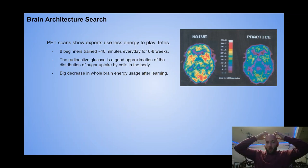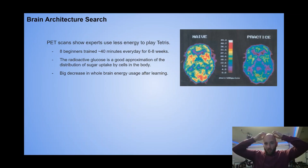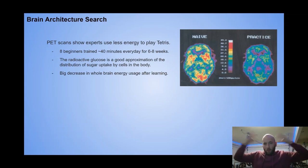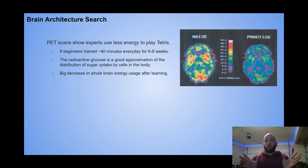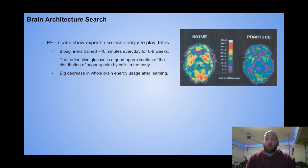The radioactive glucose is decomposing and causing gamma ray light to be emitted through the brain. The PET scanner is a ring of gamma ray cameras that capture the glucose decomposing. Essentially, the PET scan allows you to get a rough estimate of energy usage in the brain and quantify just how much energy was used by different parts of the brain.